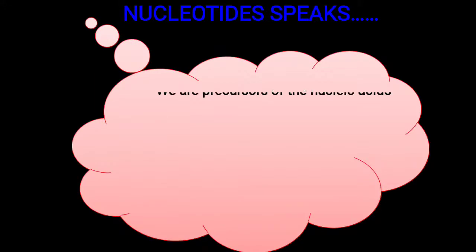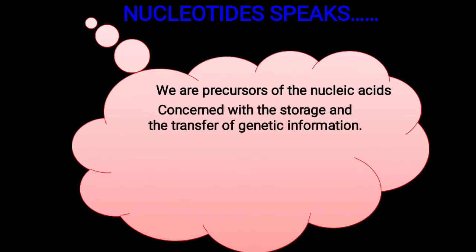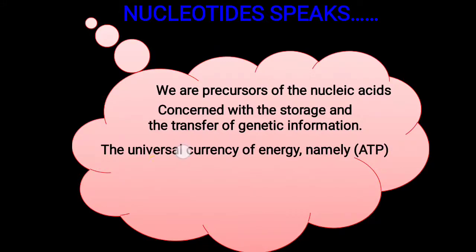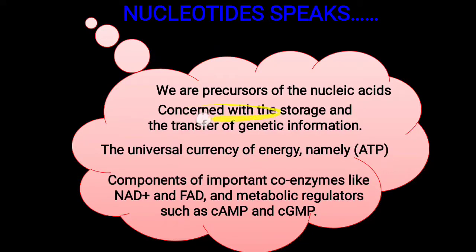Nucleotides are the important precursor molecules of nucleic acids — particularly DNA (deoxyribonucleic acid) and RNA (ribonucleic acid). They are concerned with the storage and transfer of genetic information. These are two important functions of nucleotides. They are also the universal currency of energy — whenever we talk about metabolism, ATP (adenosine triphosphate) is involved, and it is a nucleotide. Further, nucleotides are important components as co-enzymes like NAD+ and FAD, as well as metabolic regulators such as secondary messengers like cyclic AMP and cyclic GMP.